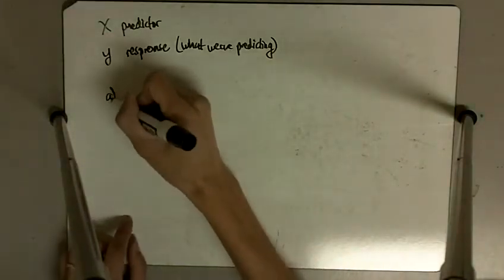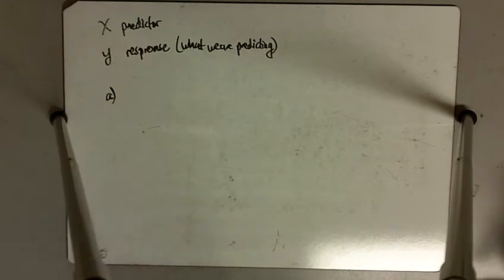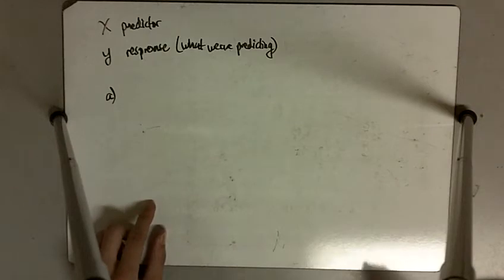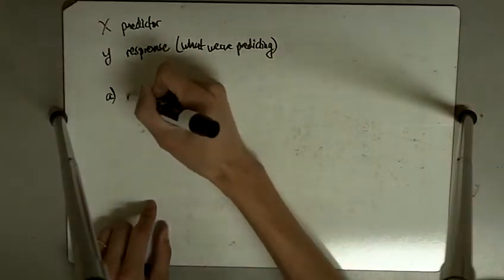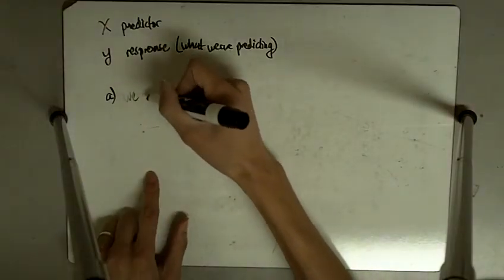So part A says you collect data on the number of gallons of gas it takes to fill up the tank after driving a certain number of miles. You wish to know how many miles you've driven based on the number of gallons it took to fill up the tank. So you want to know how many miles you've driven. We are trying to predict the miles driven.